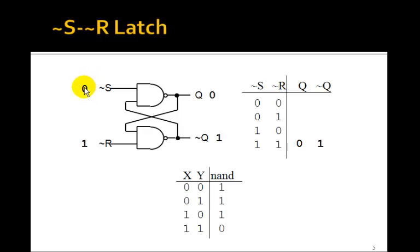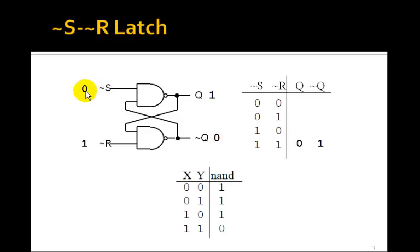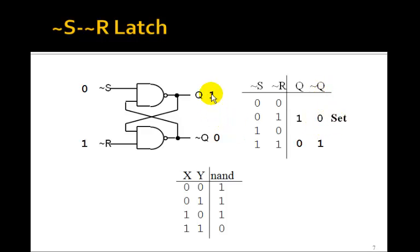Now let's see what happens if we make NOT-S go to 0. If NOT-S goes to 0, I've got a 0 and a 1 here, which means this output has to switch to 1. As soon as this output switches to 1, I have a 1 and 1 here, so this output has to switch to 0. Now I've got 0,0 here, so this output is 1. This is a stable state. Any time I make NOT-S 0 and NOT-R 1, output Q has to be 1 and NOT-Q has to be 0. We're going to call this the set state — we set Q to 1 by bringing NOT-S low.